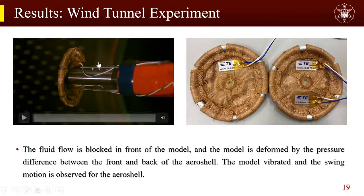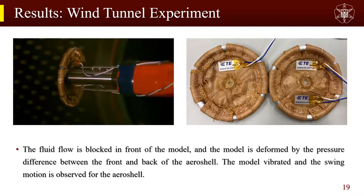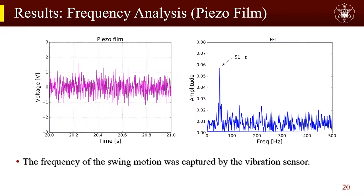Here I will show the result of our wind tunnel experiment. It was confirmed that the model was deformed and vibrated by the force from the fluid flowing in from the far left side of the screen, and we can observe the swinging motion of the aeroshell. The number of vibrations visually confirmed from the high-speed camera image was about 50 Hz. The left figure shows the time history of the output voltage of the piezo frame sensor, and the right figure shows the frequency analysis by fast Fourier transform — 51 Hz is the peak frequency, which closely matches the vibration frequency from the high-speed camera.